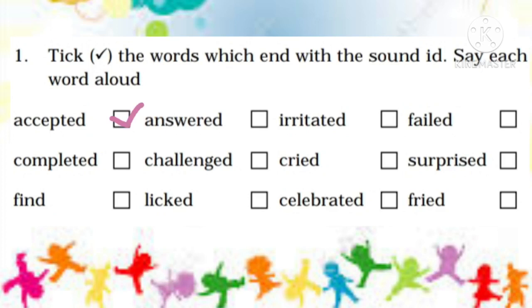Words which have the ending sound '-id' are: accepted, irritated, completed, cried, celebrated, and fried. Kids, you must speak the words loudly and pay attention to pronunciation.